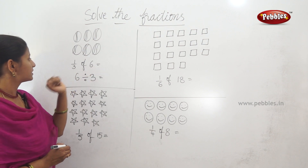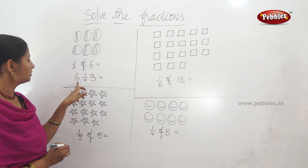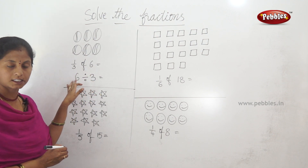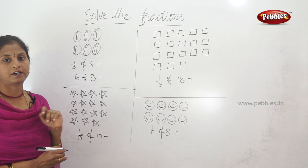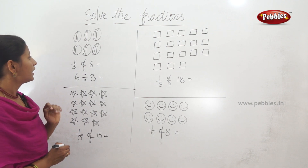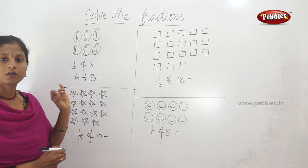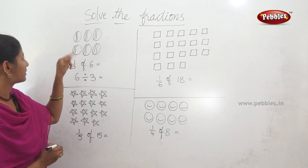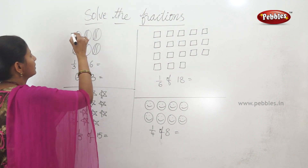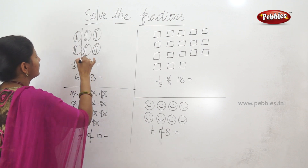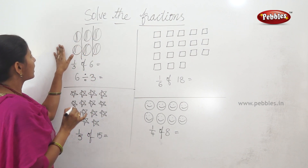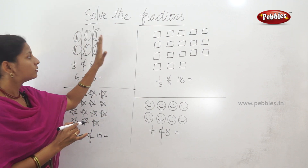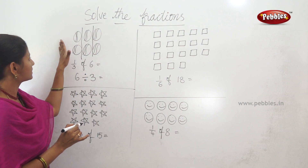1 by 3 of 6 means 6 divided by 3. Let's do the picture first. Let's divide into 3 parts. 1, 2, 3 parts.